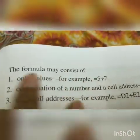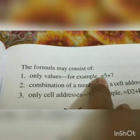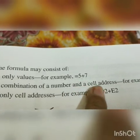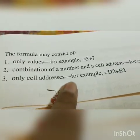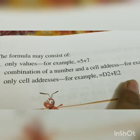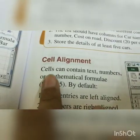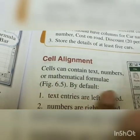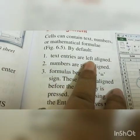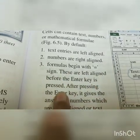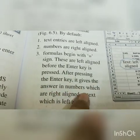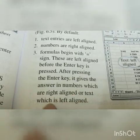The formula may consist of: Number 1 — only values, for example =5+5. Number 2 — a combination of a number and a cell address, for example =A1+3. Number 3 — only cell addresses, for example =E1+E2. Cells can contain text, numbers, or mathematical formulas. By default: text entries are left aligned, numbers are right aligned, and formulas begin with an equal sign. Formulas are left aligned before the Enter key is pressed; after pressing Enter, the result appears as a number (right aligned) or text (left aligned).